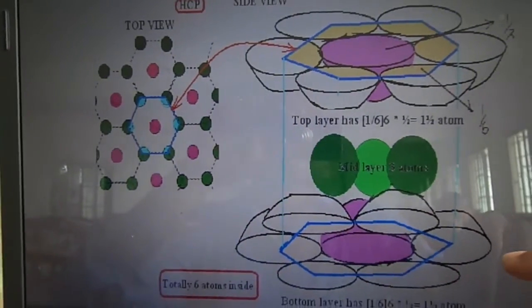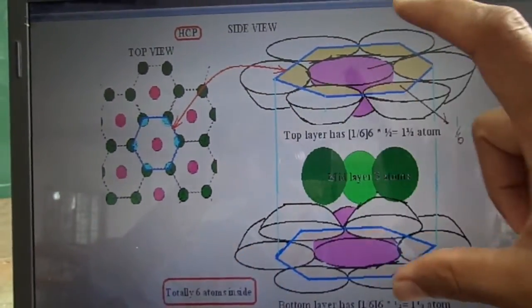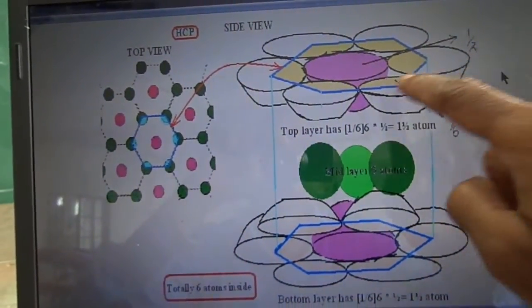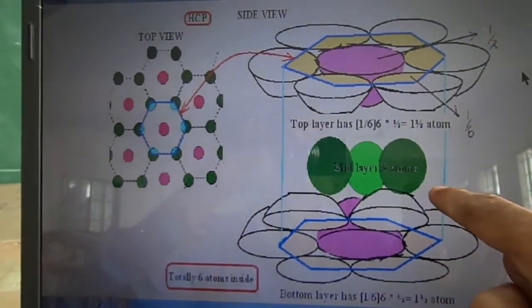The following diagram represents that. See, this is the considered hexagonal cell. And the exploded view of that structure is shown here. One and half atoms at the top, one and half atoms at the bottom, and three atoms inside.